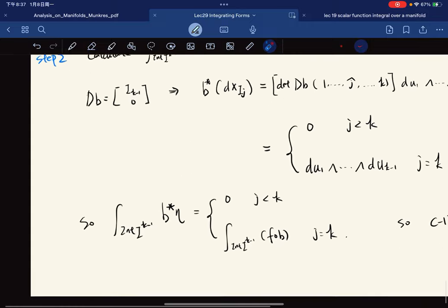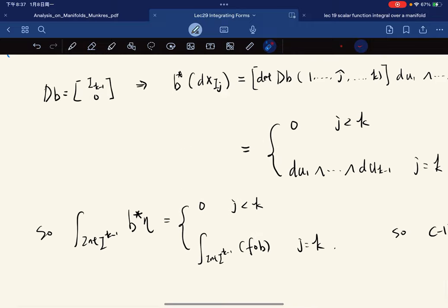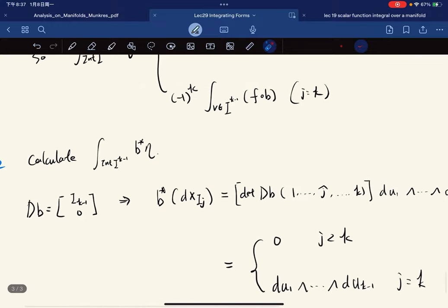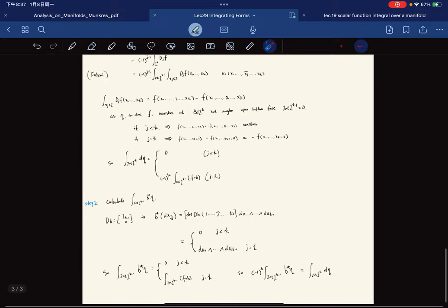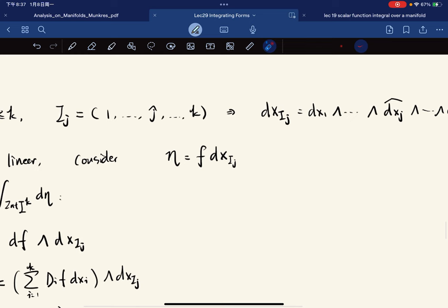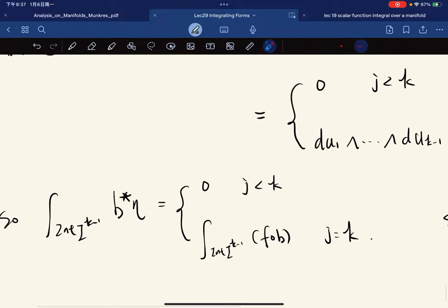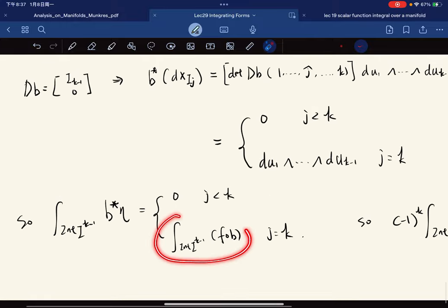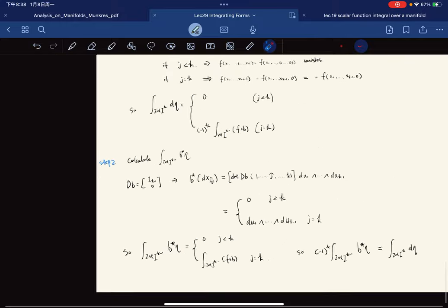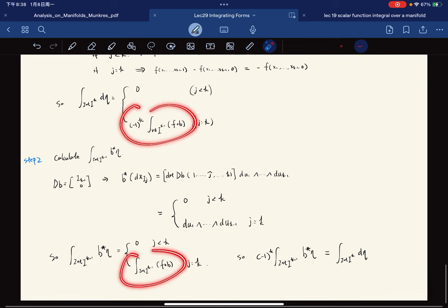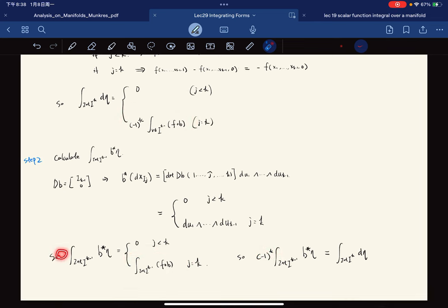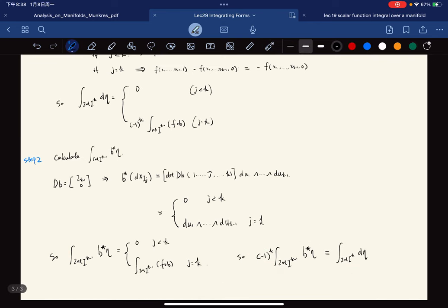So we have b* η, which is basically b* of this. Remember that b* preserves wedge product and differential operators. By some calculation it's going to look like this. Observe that they look exactly the same, but you just multiply (-1)^k in front of this, then they're equal. So this completes the proof of this lecture.